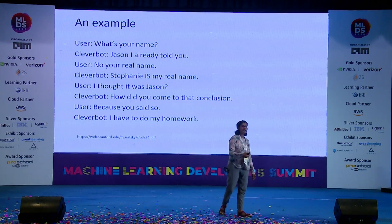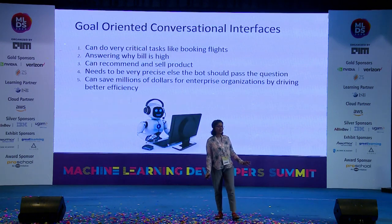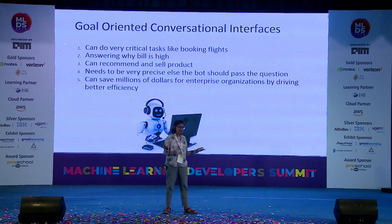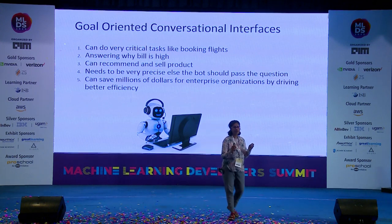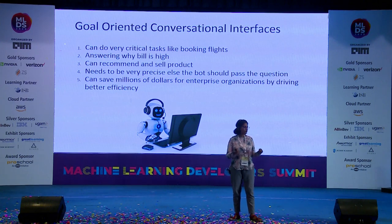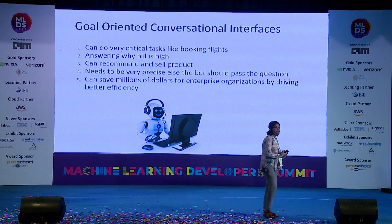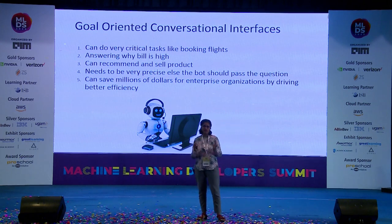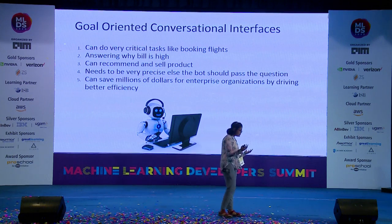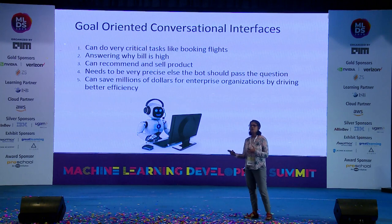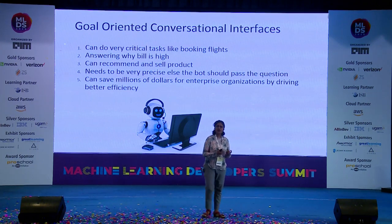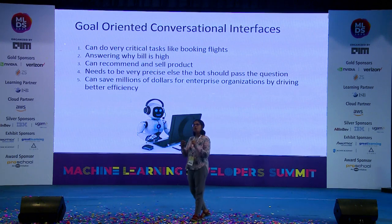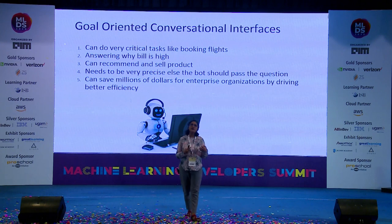The idea was that if we can crack casual chat, we could do far better things. And those far better things came into the picture about six years ago — also called enterprise bots. What these are trying to achieve is a goal, a task — possibly a complex task — like booking a flight or answering 'why is my bill high?' It could involve cross-selling or giving the user different perspectives. This is the idea behind goal-oriented conversation interfaces. If done with the right level of efficiency, we could save millions of dollars. This is more formal, more enterprise-driven, and has to be fairly accurate.